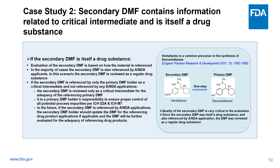If the secondary DMF contains information related to a critical intermediate and is itself a drug substance, evaluation of the secondary DMF is based on how the material is referenced. In the majority of cases, the secondary DMF is also referenced by ANDA or NDA applicants. In this scenario, the secondary DMF is reviewed as a regular drug substance. If the secondary DMF is referenced only by the primary DMF holder as a critical intermediate and not referenced by any ANDA or NDA applications, the secondary DMF is reviewed only as a critical intermediate for the adequacy of the referencing primary DMF.